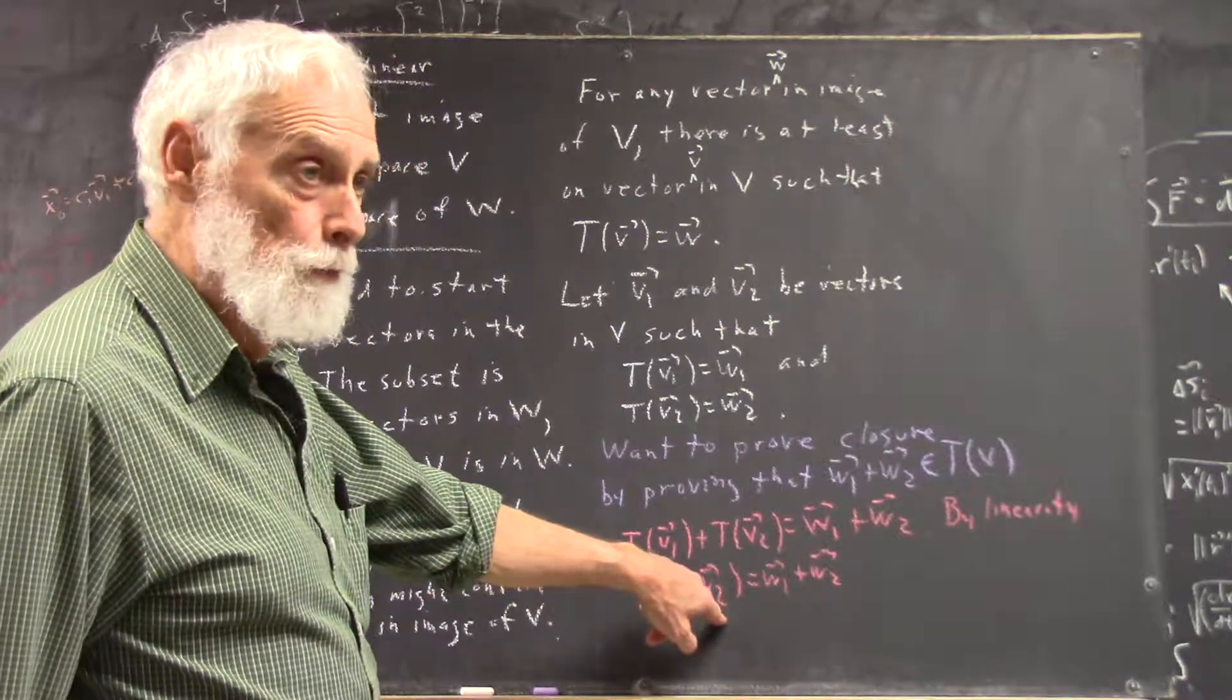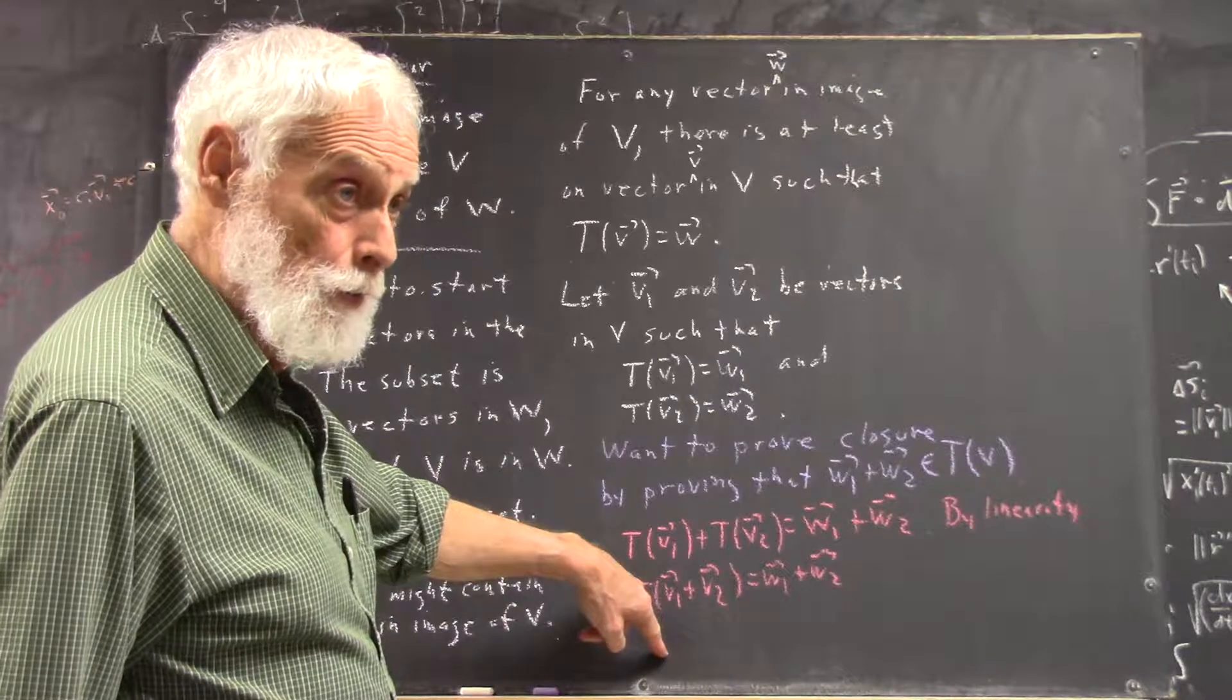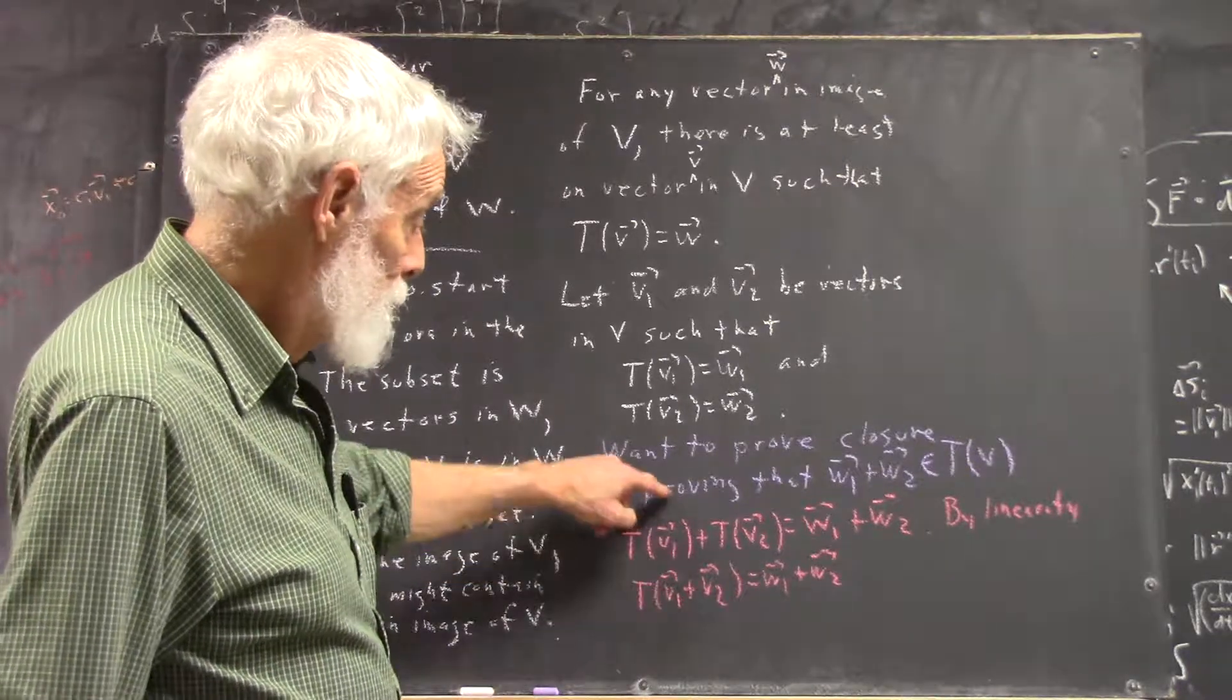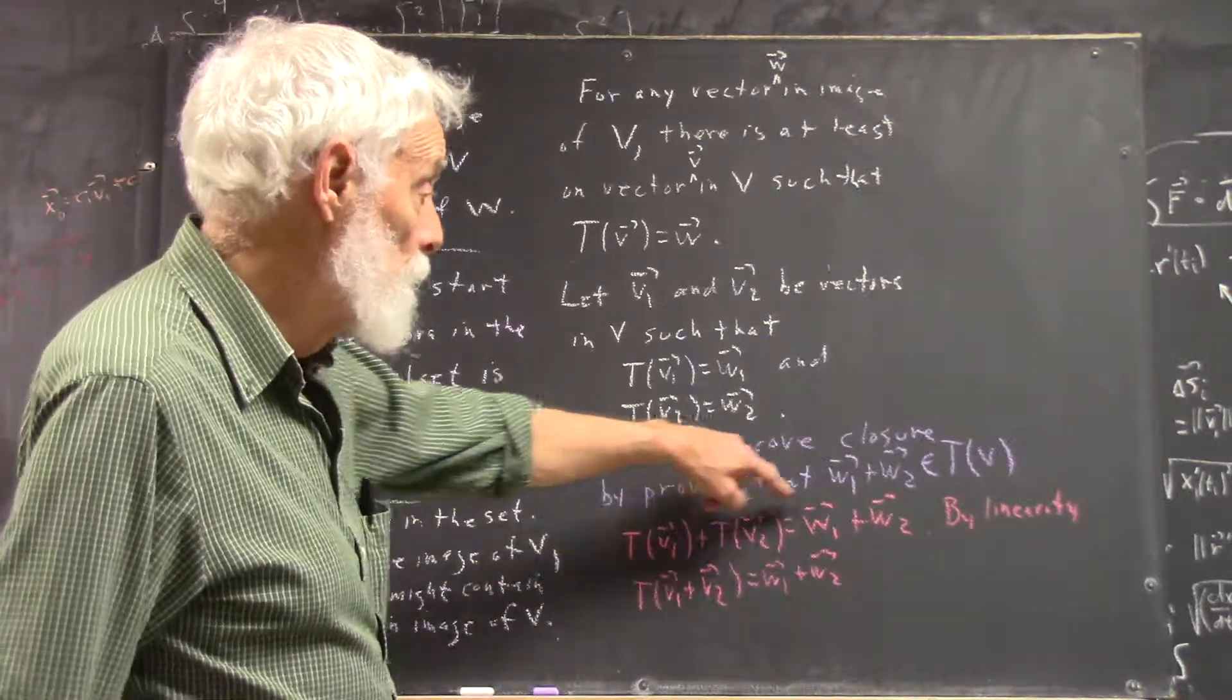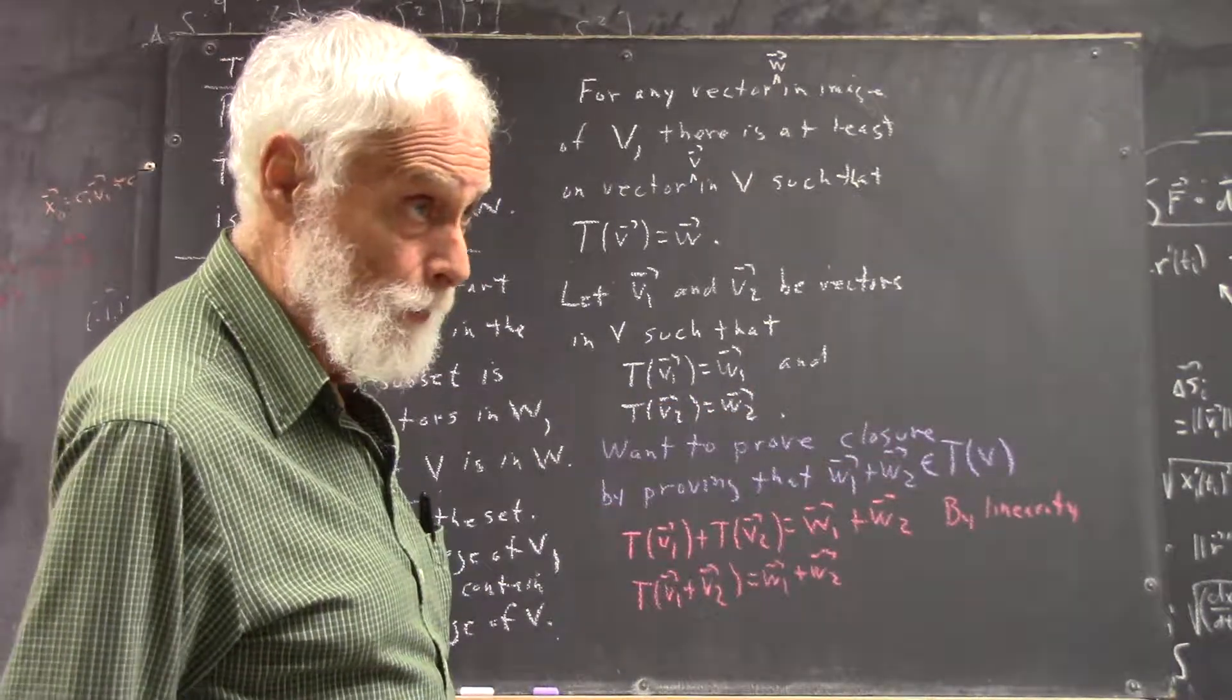T of V1 plus V2. I mean, this is equal to T of V1 plus T of V2, right? T of V1 plus V2 is equal to this, which is equal to W1 plus W2. This is equal to W1 plus W2, right?